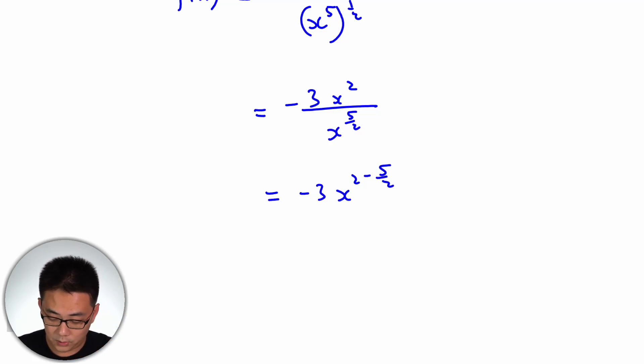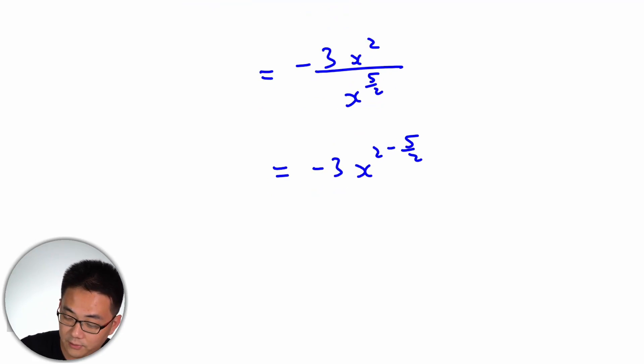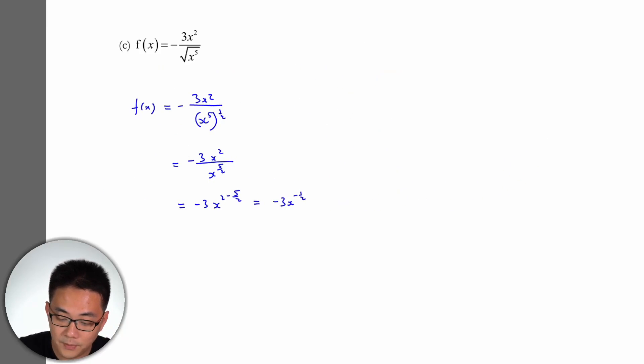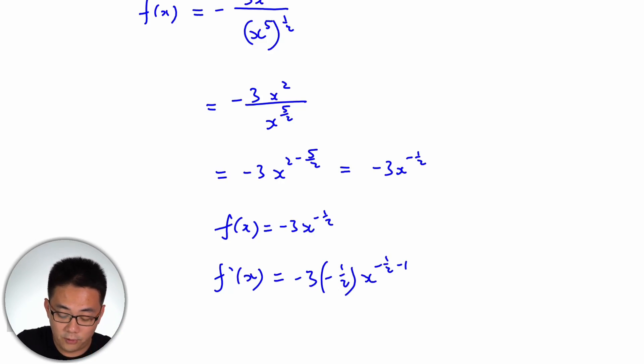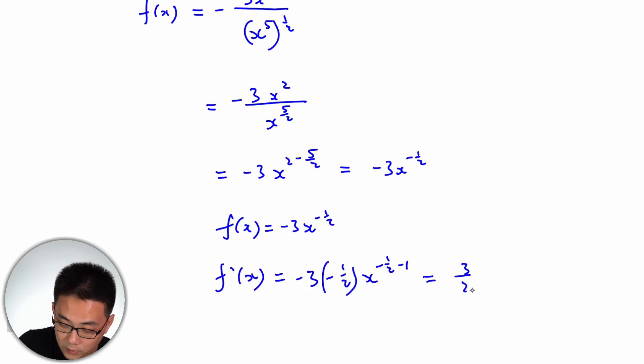On the calculator, 2 minus 5 over 2 is actually negative half. So negative 3, x to the minus half. So now we're going to differentiate this. Remember, f(x) equals to negative 3, x to the minus half. So f'(x). Now f prime means we differentiated already. Minus 3 times minus half, x to the minus half minus 1. Just use the formula. And this would just be 3 over 2, x to the negative 3 over 2.